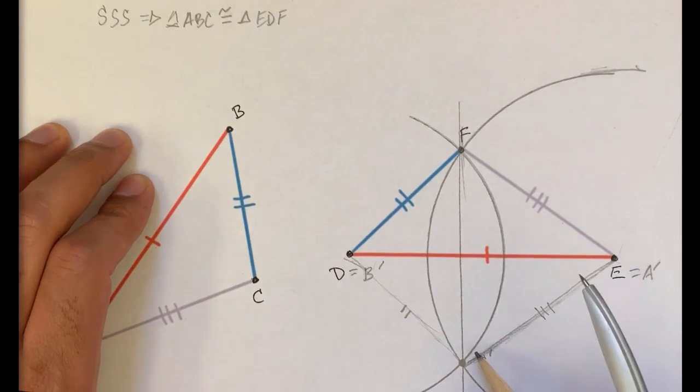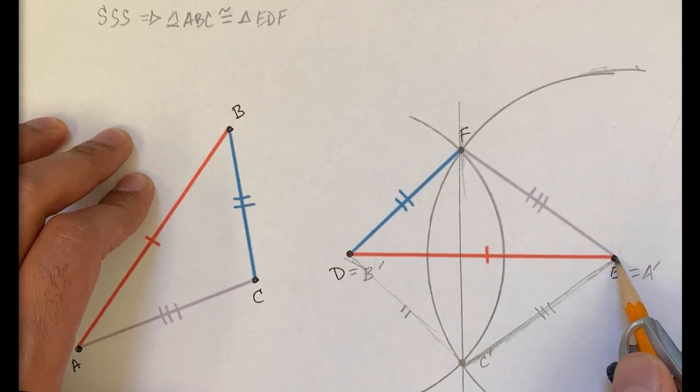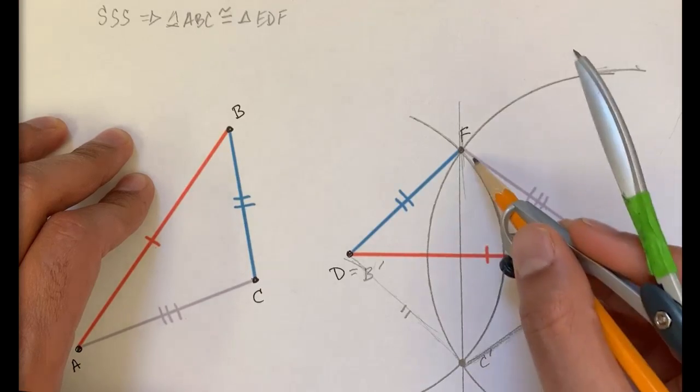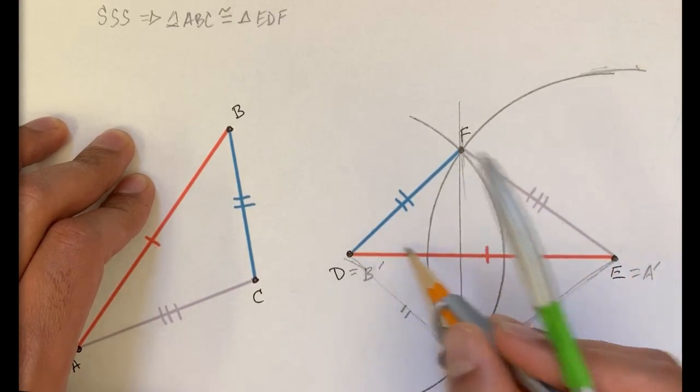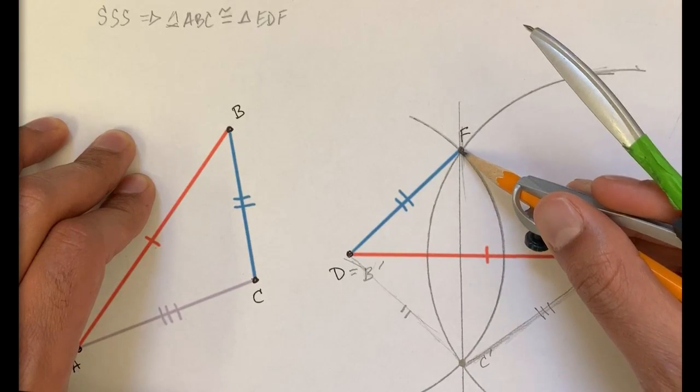And you can see that point E, because it is equidistant to C prime and F, it must sit on the perpendicular bisector of the segment FC.